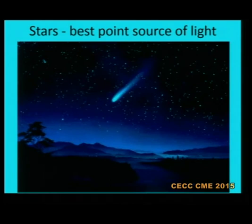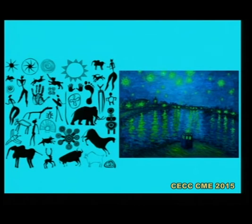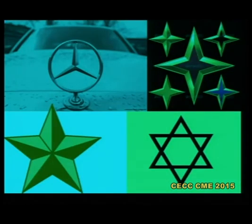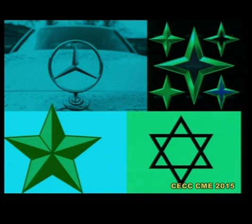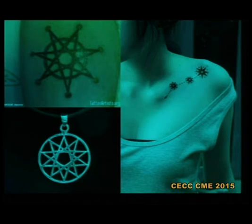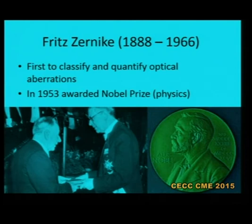Since the evolution of mankind, stars have been the best point source of light. Because of optical aberrations in the artist's eye, stars have been drawn with various kinds of radiations — from primitive art to modern art. Stars are never drawn as a point, but as a radiating source of light: from the three-radiating Mercedes-Benz star, four-pointed Christian star, five-pointed military star, six-pointed Star of David, seven-pointed sailors' star, to eight- or ten-pointed stars.